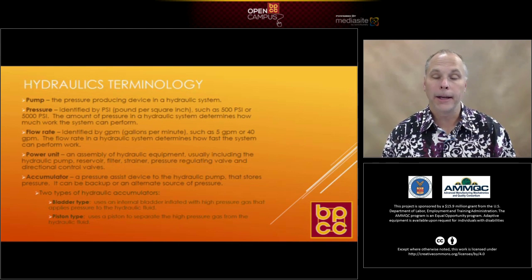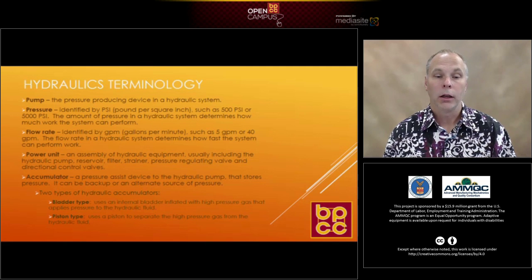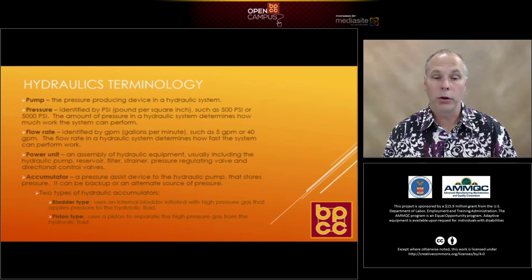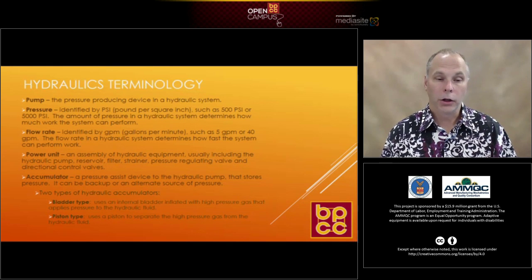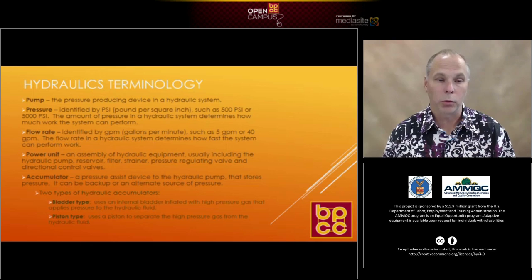If you're utilizing a certain type of actuator, such as a cylinder, and you can transfer the fluid very quickly — say at 40 or 50 gallons per minute — then you're pushing a lot of fluid and therefore you can move that cylinder really fast. You can use different types of flow control valves to adjust that, and pressure control valves to adjust your pressure to make sure you're not over-pressurizing the system.